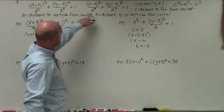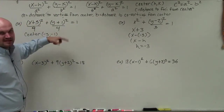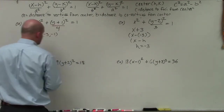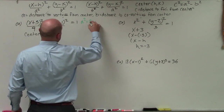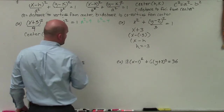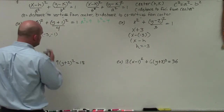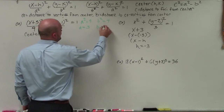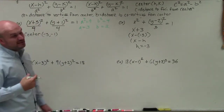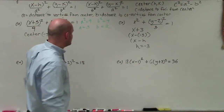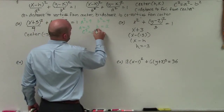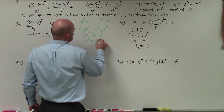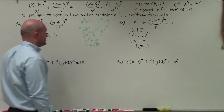Looking at our a squared and b squared as denominators, we just need to decide which one is a squared and which one is b squared. Since a squared is always larger than b squared, I can determine that a squared is equal to 9 and b squared is equal to 4. Therefore, a is equal to 3 and b is equal to 2. To find c squared, we use the relationship: c squared equals a squared minus b squared. So c squared equals 9 minus 4, giving us c squared equals 5. Taking the square root, c equals the square root of 5.